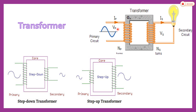The transformer has a core with primary windings and secondary windings. IP is the primary current flowing through the primary wire, and secondary current flows through the secondary coil. EP is the primary voltage and ES is the secondary voltage. In a step-down transformer, the number of turns in the primary coil is less than in the secondary coil, and the output voltage is less than the input voltage.